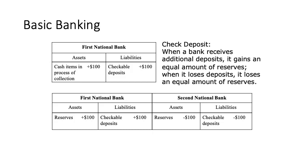To explain this, assume someone deposits money via check to be collected. Checkable deposits in liabilities will increase and cash items in process of collection will also increase by the same amount. When First National Bank collects this money from Second National Bank, reserves will increase by $100 in First National Bank and decrease by $100 in Second National Bank. At the same time, checkable deposits will decrease by $100 in the second bank because the person who wrote the check allowed their checkable deposit to be decreased.